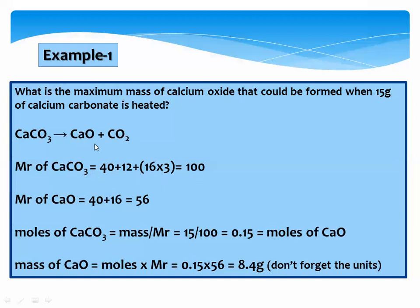Now, the relative molecular mass of calcium oxide: one calcium is 40, one oxygen is 16 — add them to get 56. Moles of calcium carbonate equals mass given divided by relative molecular mass. The given mass is 15 and the relative molecular mass is 100, so we obtain 0.15 moles of calcium carbonate.